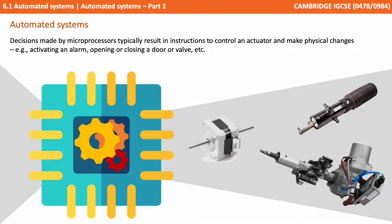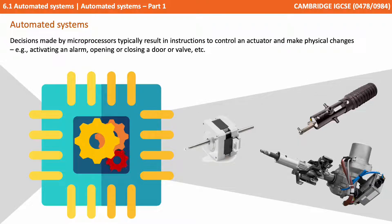Some of the decisions made by the microprocessors typically result in instructions to control an actuator in order to make physical changes such as activating an alarm or controlling a motor to open or close a door or valve.